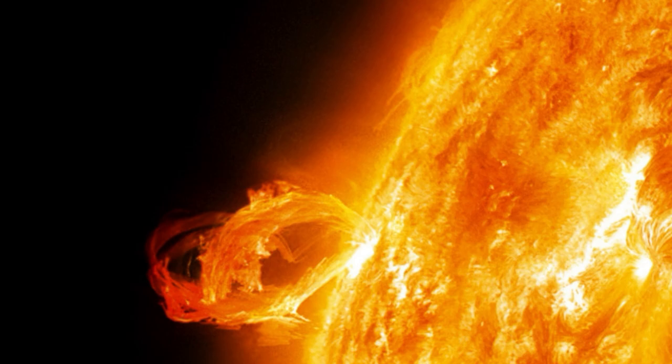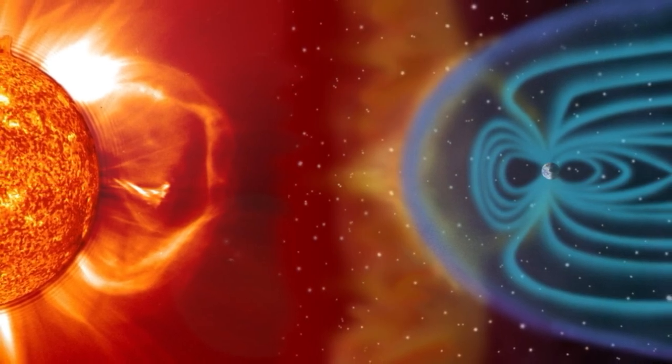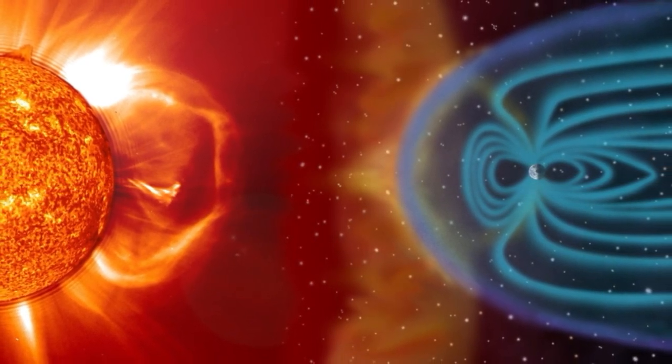Earth doesn't orbit the sun in a perfect circle, but rather in a wobbly ellipse. This elliptical orbit naturally means Earth moves closer to the sun during certain parts of the year and farther away during others.